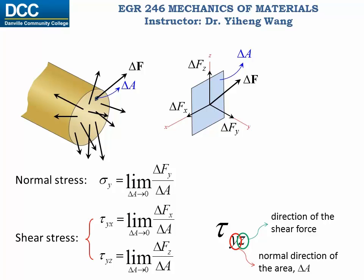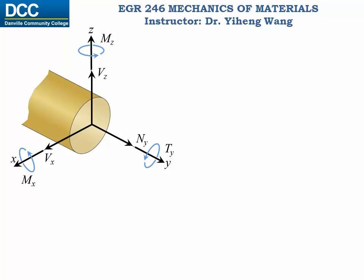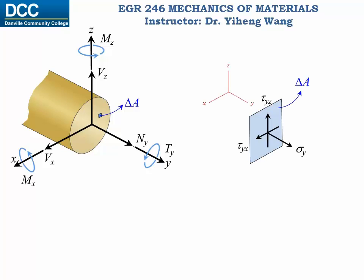The first subscript indicates what surface it is. Surfaces are defined by their normal direction — in this case the y direction. The second subscript indicates the actual direction of the shear stress vector. Since stress is defined as force over area, in the SI unit system its unit is newton per meter squared, or Pascal, and in the US customary unit system its unit is pound per inch squared, or psi. Therefore, for an infinitesimal area delta A on this cross-sectional surface, it could have a maximum of three independent stress vectors acting on it — a normal stress sigma and two shear stresses tau, corresponding to the three internal forces.